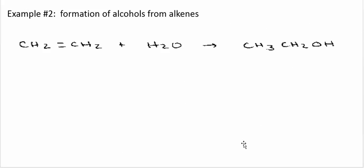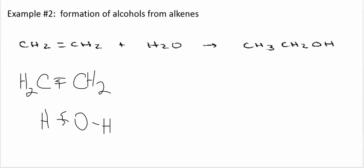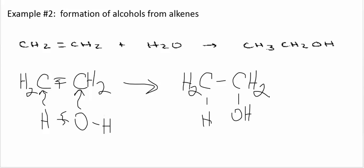Water can add across the double bond similarly to the Br2 and we can visualize the water adding in this fashion. So we have a double bond here and we have water. We're gonna break the double bond. We're gonna break the bond between the H and the OH and we're gonna add H to one side and OH to the other side. And that will give me this product right here. And we've eliminated the double bond.